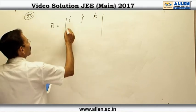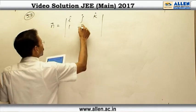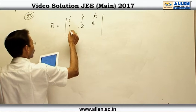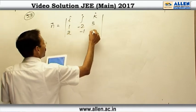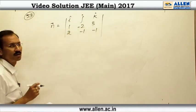So, we are using the direction ratios 1, -2, 3 and 2, -1, -1. This will give us a normal vector.